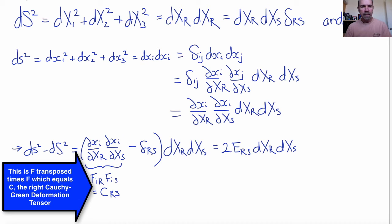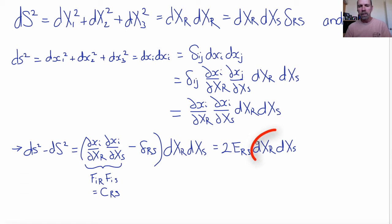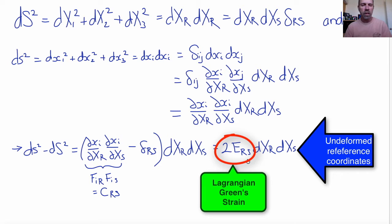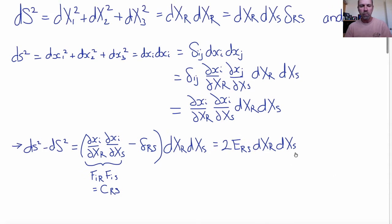We see here that this change in squared length is related to the elements of our original undeformed coordinates by the Lagrangian Green strain tensor. This goes to show that what the Lagrangian Green strain tensor does is express squared length changes with respect to undeformed coordinates.